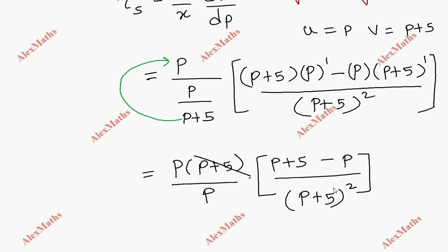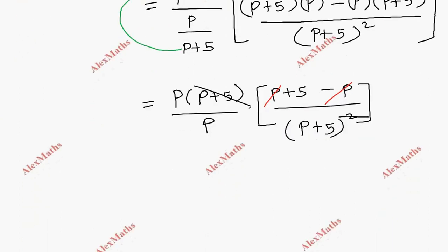So p plus 5 squared. That is where p and minus p cancel out. After the remaining, the elasticity of supply is 5 by p plus 5.